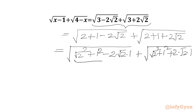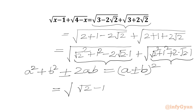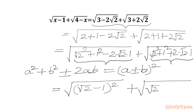This is the algebraic identity: a² plus b² minus 2ab equals (a minus b)², and a² plus b² plus 2ab equals (a plus b)². So we can write our RHS as the square root of (√2 minus 1)² plus the square root of (√2 plus 1)².